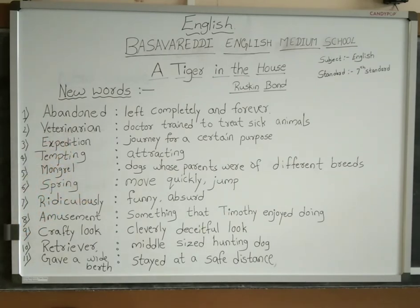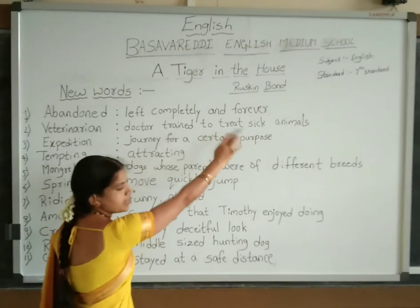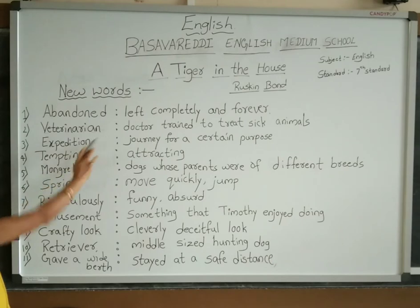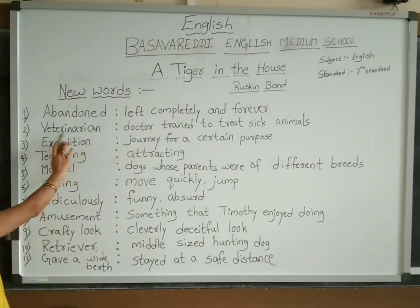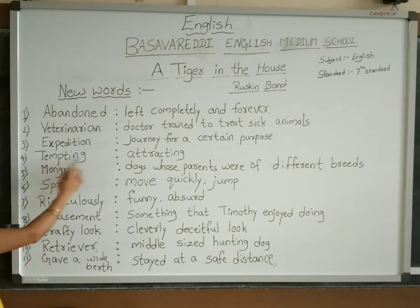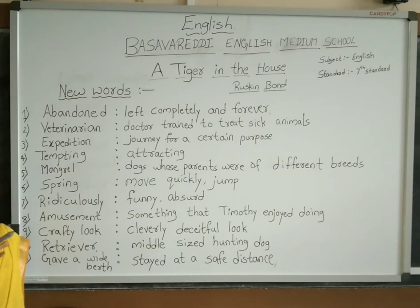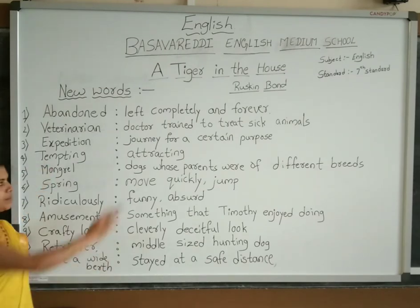The next word is 'veterinarian.' It is pronounced as veterinarian. Veterinarian means a doctor trained to treat sick animals. Just as for human beings we have specialists like orthopedic doctors and dentists, likewise the doctor who treats sick animals is called a veterinarian. Next, 'expedition' means a journey for a certain purpose — moving from one place to another with some intention or purpose.